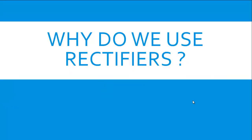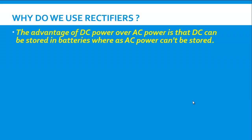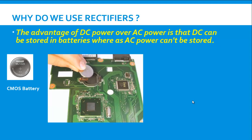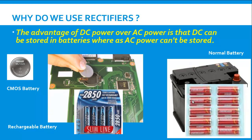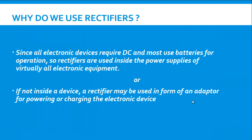Why do we use rectifiers? We use rectifiers because of the inherent advantage of DC that it can be stored in batteries whereas AC power cannot be stored. DC power can be stored in any battery be it a CMOS battery or rechargeable battery or any normal battery whereas it is not possible to store AC power and all electronic devices require DC for operation.